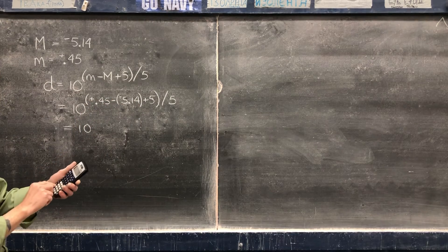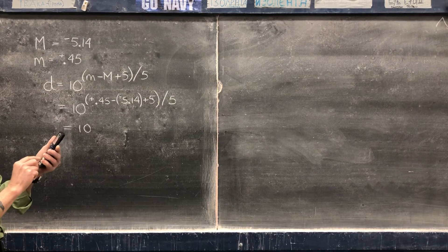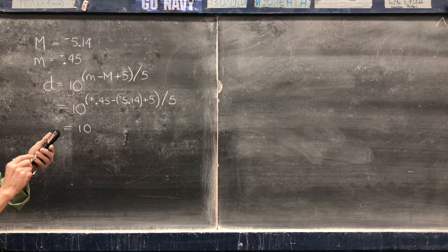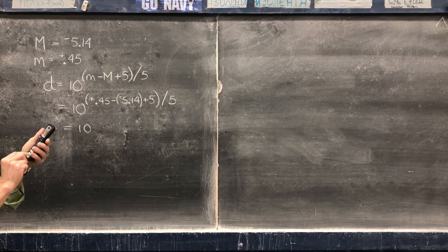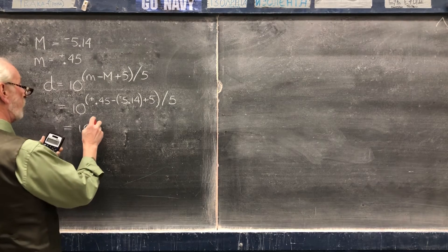So, here we go, 0.45, subtracting a negative is the same as adding a positive, plus 5.14, plus 5. I got 10.59.